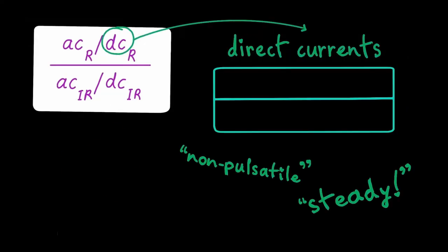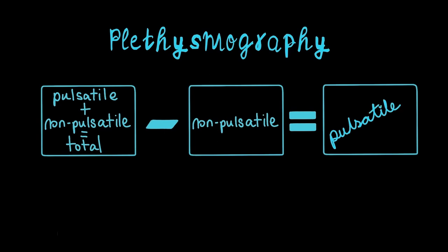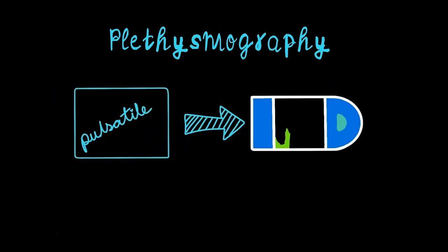Direct currents are non-pulsatile and steady like bone and tissue. Plethysmography lets us minus non-pulsatile volume from the total volume for the pulsating volume. Elementary.